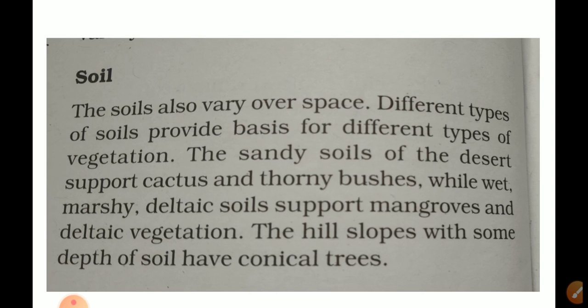Another relief feature affecting the natural vegetation of India is soil. Soil also varies from place to place. Different types of soil are found across India — for example, alluvial soil in the Northern Plains, mountainous soil in hilly areas, and black soil in the plateau regions. Different types of soil support different types of vegetation.